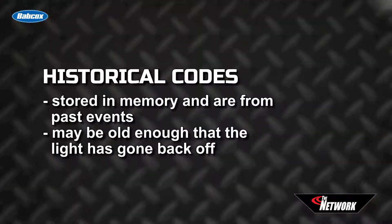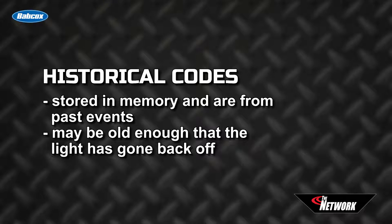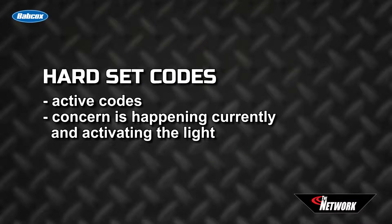There are three types of codes. Historical codes: these codes are stored in memory and are from past events. They may be old enough that the light has gone back off, but they're still there because the event should be considered during diagnosis. Hard set codes are codes that are active — this concern is happening right now and is activating the light.